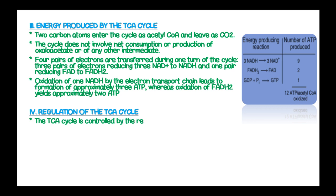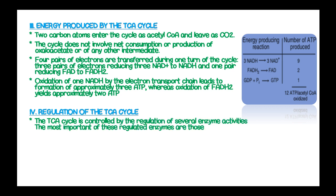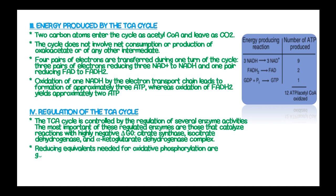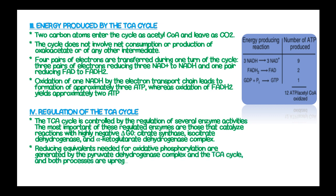The TCA cycle is controlled by the regulation of several enzyme activities, and the most important of these are those that catalyze reactions that are highly exergonic: citrate synthase, isocitrate dehydrogenase, and alpha-ketoglutarate dehydrogenase complex. Reducing equivalents needed for oxidative phosphorylation are generated by pyruvate dehydrogenase complex and the TCA cycle, and both processes are upregulated in response to a rise in ADP.